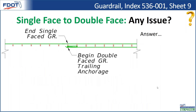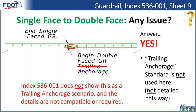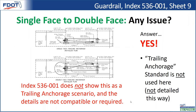The next issue that showed up in a few plan sets is going from single-face guardrail to double-face guardrail. Engineers were not clear on how to detail this out. In this case, they called out a trailing anchorage on one side and single-face guardrail on the other — ending single-face guardrail and beginning double-face at the same post location. The answer is yes, there's an issue: the trailing anchorage standard is not used here. The guardrail single-face doesn't continue with a trailing anchorage in any standard plans drawing. You don't need a full trailing anchorage with a breakaway post at this location because the ribbon strength is already developed.